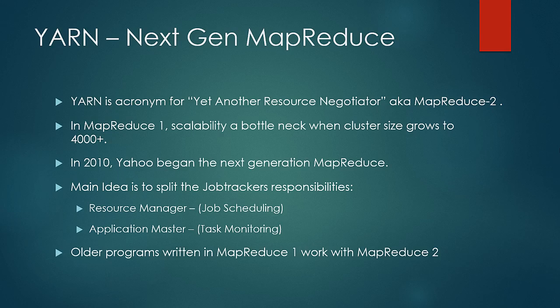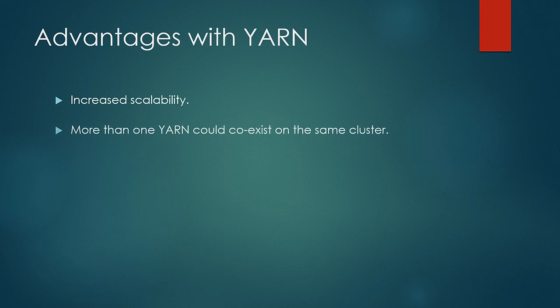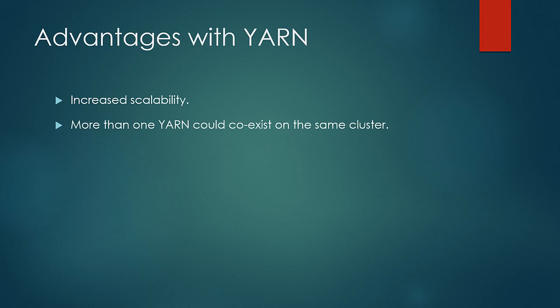On this slide, we'll look at the advantages YARN brings over classic MapReduce. First and foremost, scalability increased dramatically by splitting the responsibilities of the job tracker into two. Second, more than one YARN application could coexist on the same cluster — along with MapReduce, there can be another distributed framework running alongside it on the same cluster.